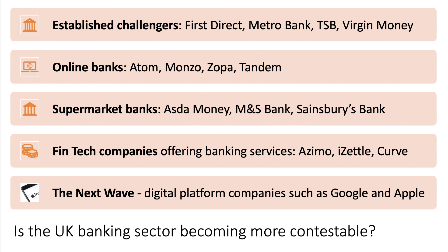The supermarkets have tried to break into banking — M&S, Sainsbury's, and Tesco, which has now I think closed its bank. There are also fintech companies like Azimo, iZettle, and Curve. And who knows — the next wave of digital platform companies like Apple Pay, Google Pay, and Amazon could well be big players in banking and financial services in the years to come.